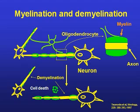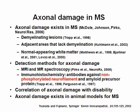So, what happens to axons in MS? Axonal damage has been detected in MS, not only in demyelinating regions, but also in adjacent areas that lack demyelination, and even in the normal appearing white matter. This has been demonstrated by new detection methods such as MRI and MR spectroscopy, or immunohistochemistry using antibodies against markers for damaged axons, non-phosphorylated neurofilament, and amyloid precursor protein.